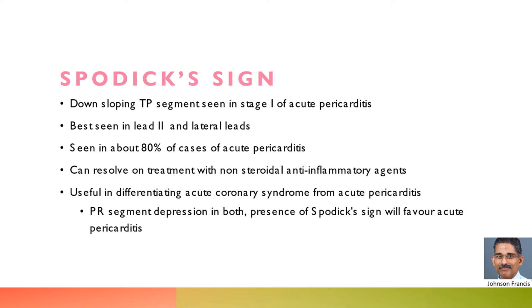Spodic sign is useful in differentiating acute coronary syndrome from acute pericarditis. PR segment depression is noted in both acute coronary syndrome and acute pericarditis, but the presence of Spodic sign will favour acute pericarditis.